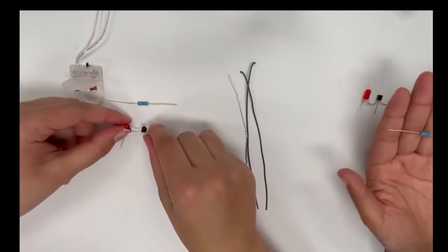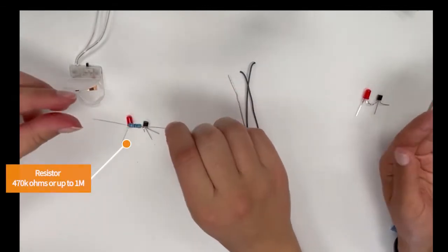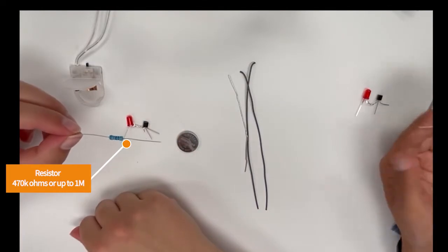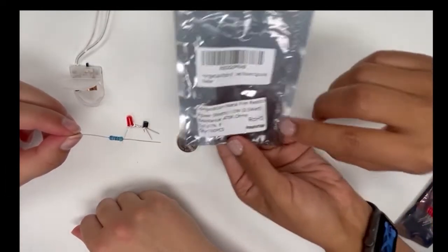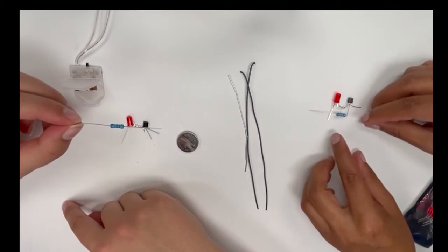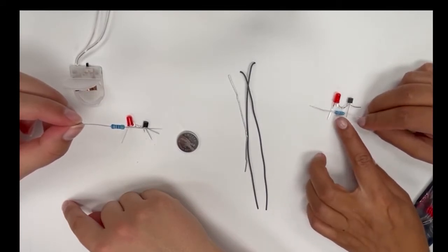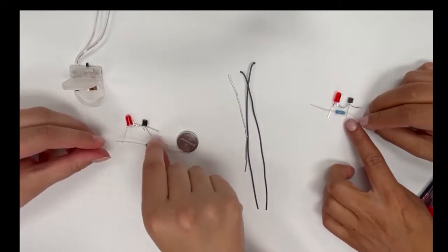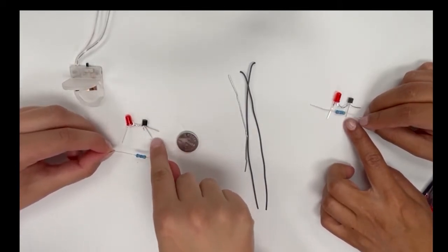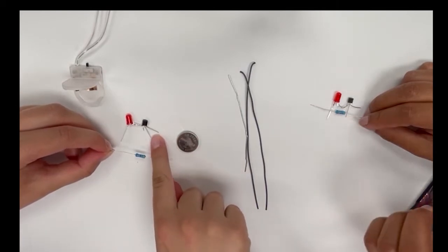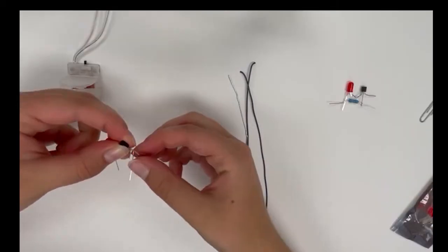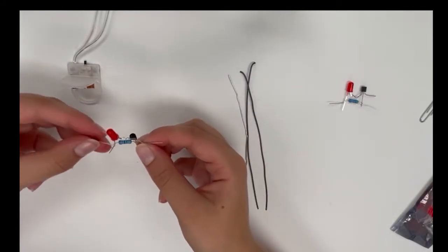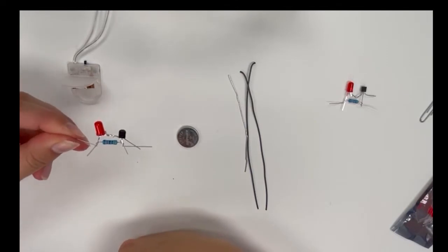Now we are going to focus on the resistor. The resistor literally resists energy. In this case, we have a 470K resistor. We are going to connect the resistor, one end through the positive of the LED and the other one to the B rod, so to the middle rod of the transistor. Let's do that.